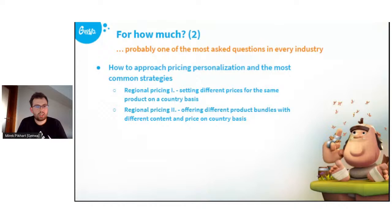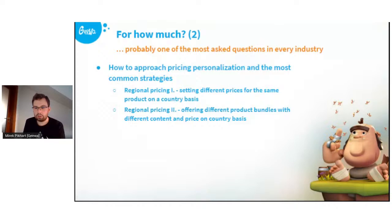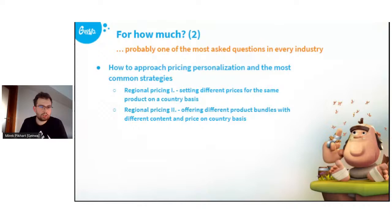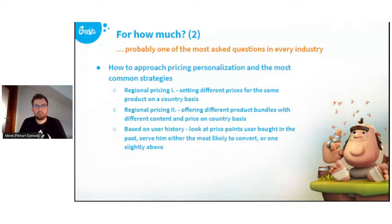An alternative to regional pricing is preparing different product bundles for different regions. We do this with our starter pack — we actually have three starter packs. Based on the country and phone you use, you're assigned to one of them. For above-average income countries we offer a bigger starter pack at a higher price. All of them have the same relative valuation — for example, all are 60% discounted — but each has a different price point and different content.